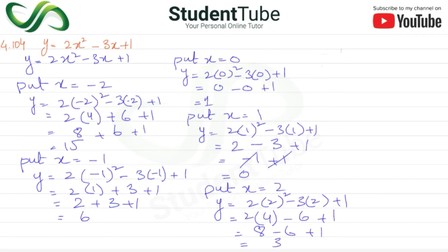So here we have 5 values in the table of values. For x = -2, y = 15; x = -1, y = 6; x = 0, y = 1; x = 1, y = 0; x = 2, y = 3.